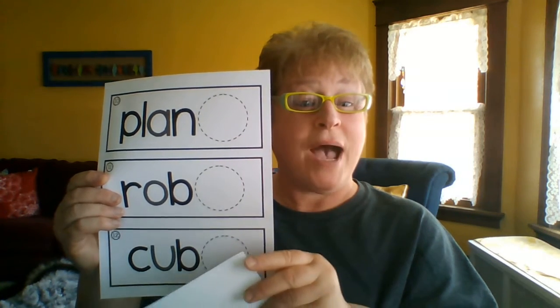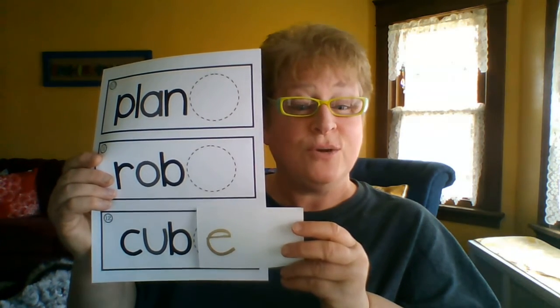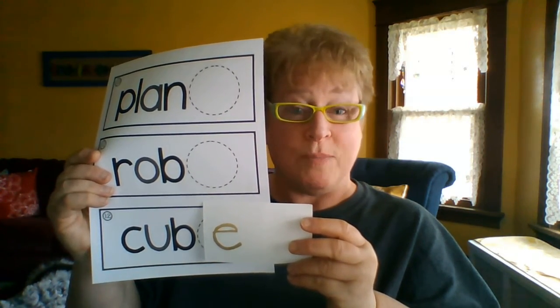And it says to the o, 'what's your name?' The o says 'my name is o', the e is quiet. So instead of rob, we have r-o-b-e, robe. And in cub, the e says to the u, 'what's your name?' and the u says 'my name is u', and the e is quiet. So now instead of cub, we have cube, cube. Plain, robe, cube. Great job.